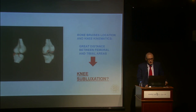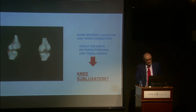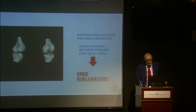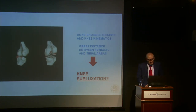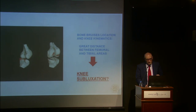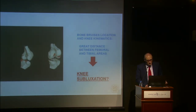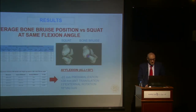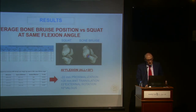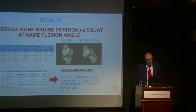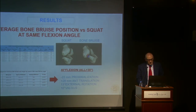We then identified the bone bruise location and examined the kinematics of this knee during flexion-extension. There was great distance between femoral and tibial areas, indicating a knee subluxation was needed to achieve the match of the two bone bruise regions. The average position showed 46 degrees of flexion, all cases more than 30 degrees. There was 22 mm of proximilization of the tibia, 28 mm of anterior translation, 13 degrees of external rotation, and 10 degrees of valgus when the bone bruise occurred.